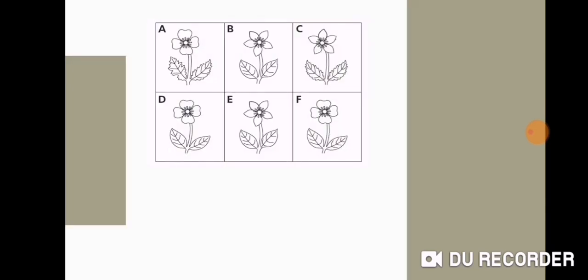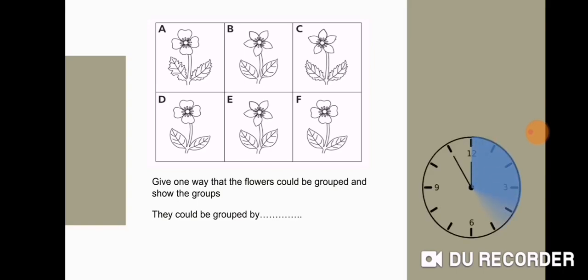Okay, here we have another question. We have six flowers. Give one way that the flowers could be grouped and show the groups. They could be grouped by what? Okay, they could be grouped by leaf shape, for example.